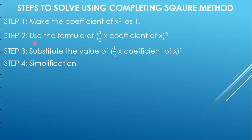Then comes the second step. In the second step we use the formula which is the base of this method: half into coefficient of x, the whole square. Many students make mistakes in this formula. The formula is half into coefficient of x, the whole square — and not half into coefficient of x to the power 2. It's a minute difference, but using the wrong formula will obviously give you the wrong answer.